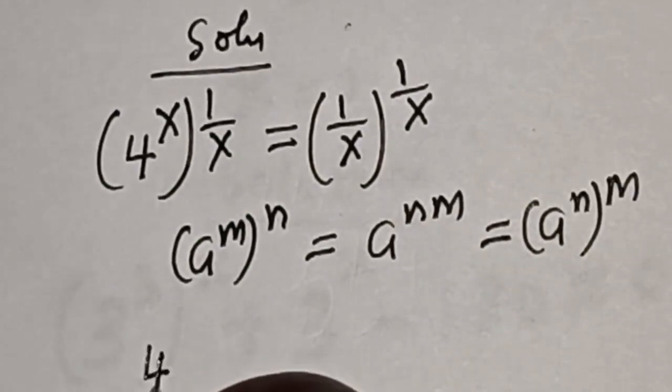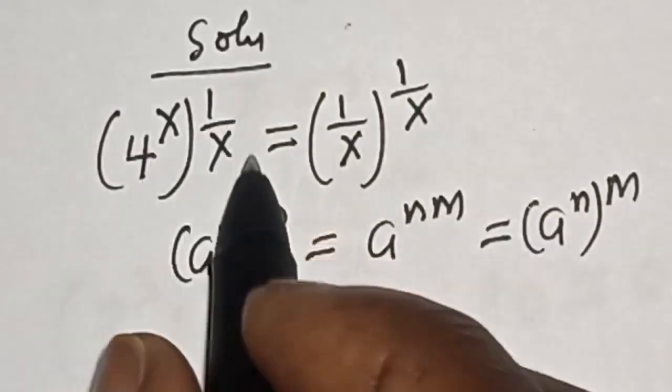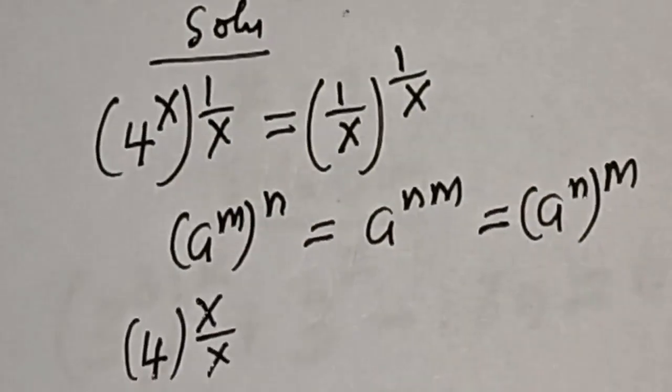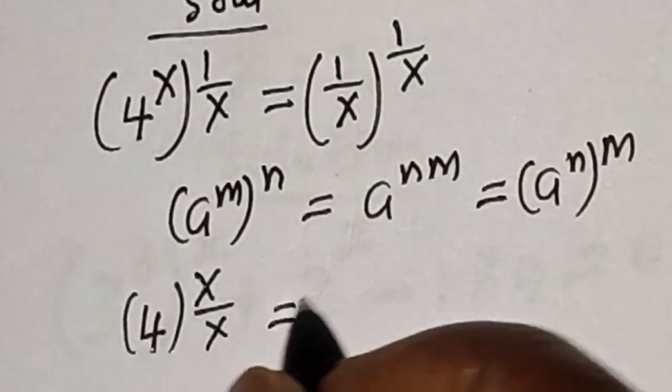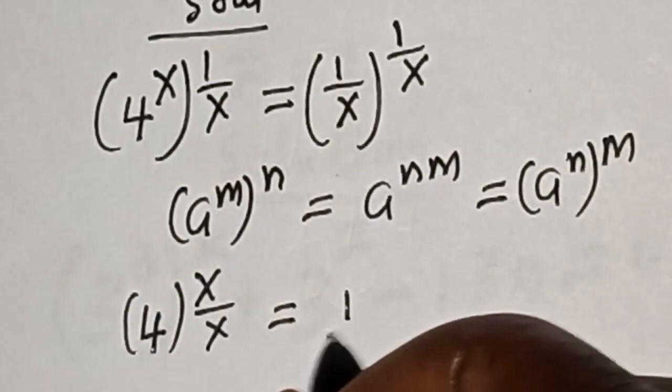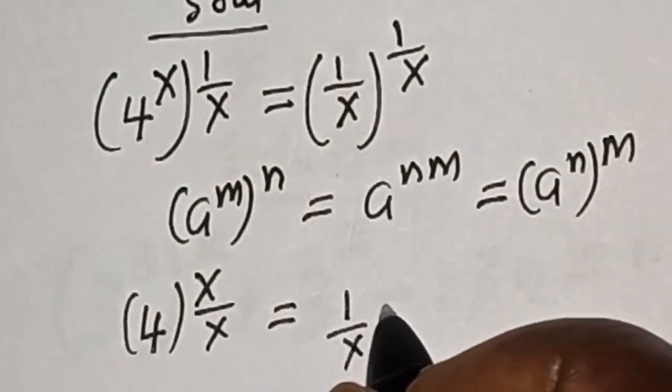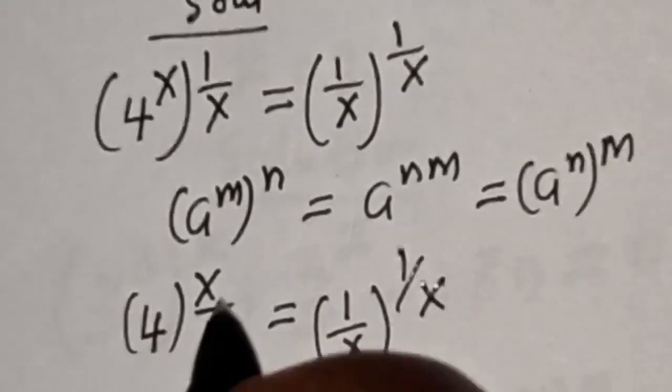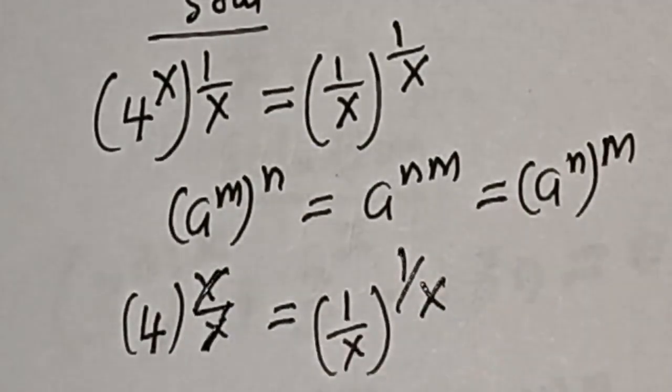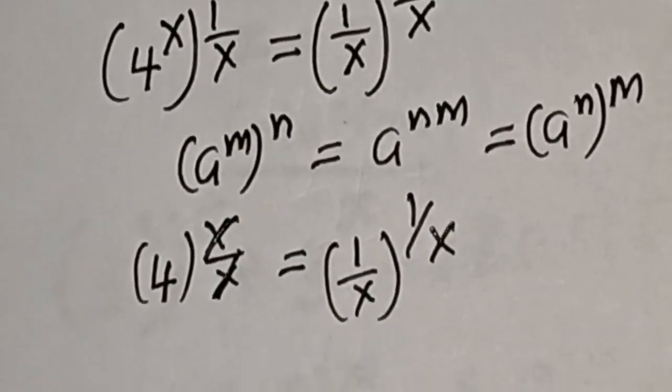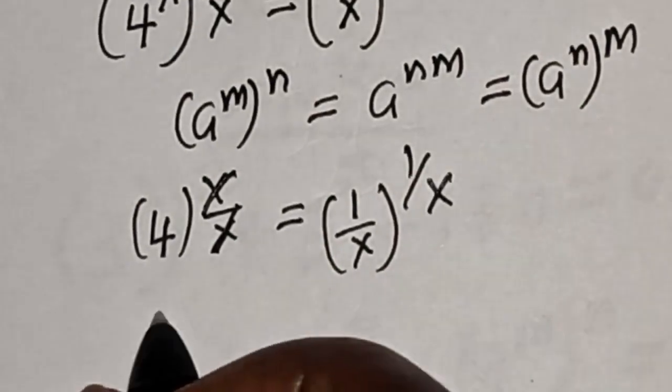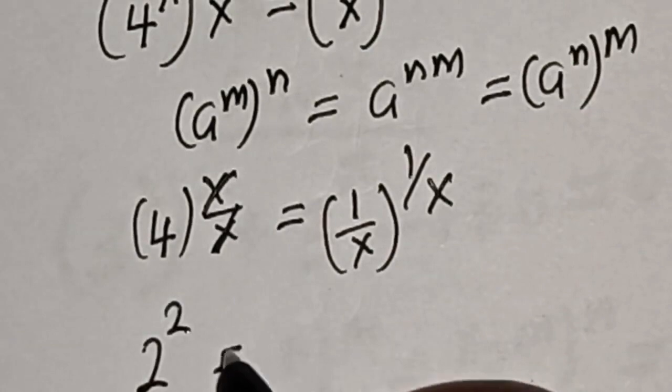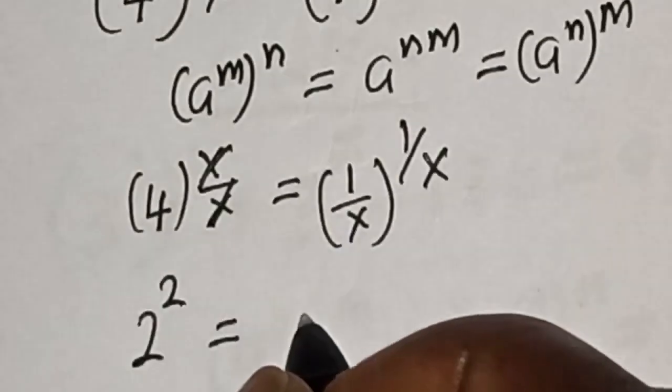Then here we have 4 raised to the power of x times 1 over x, which equals 1 over x all raised to the power 1 over x. This cancels out. We have 2 raised to power 2 is equal to 1 over x all raised to the power 1 over x.